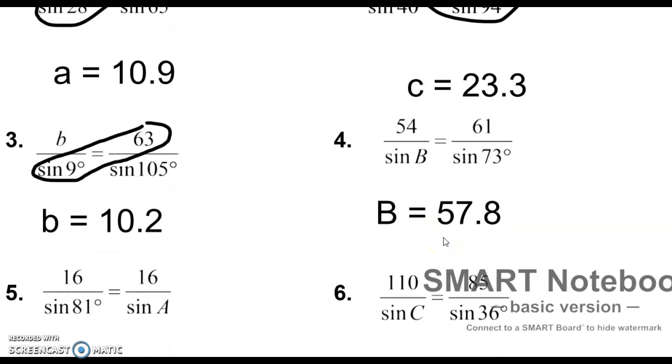Next one. There's the unknown. This time the unknown is in the bottom and it's also with the sine. So this one's a little bit different. We're still going to multiply our two knowns. We're going to go 54 sine of 73, find an answer, divide it by 61.